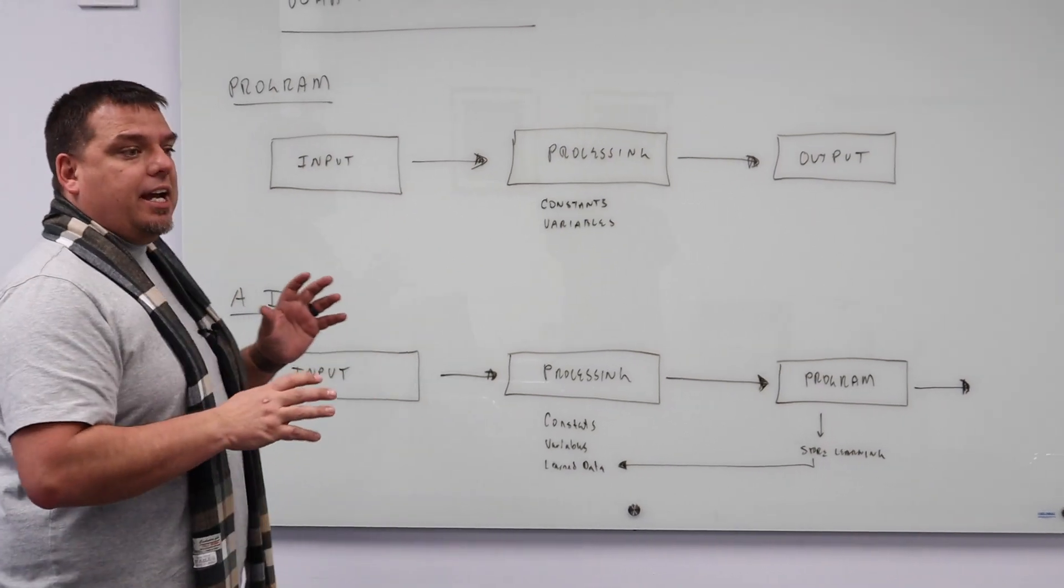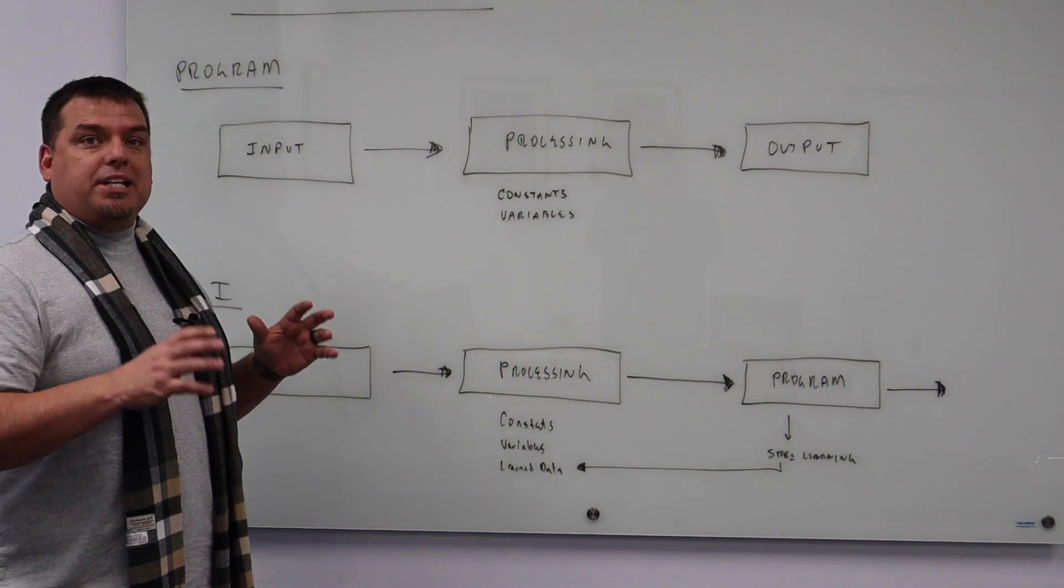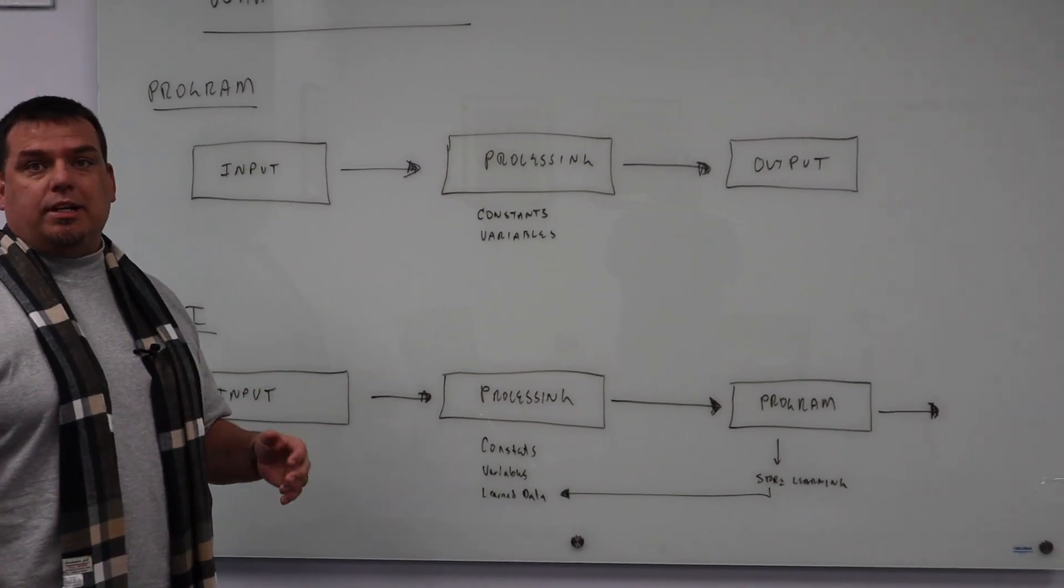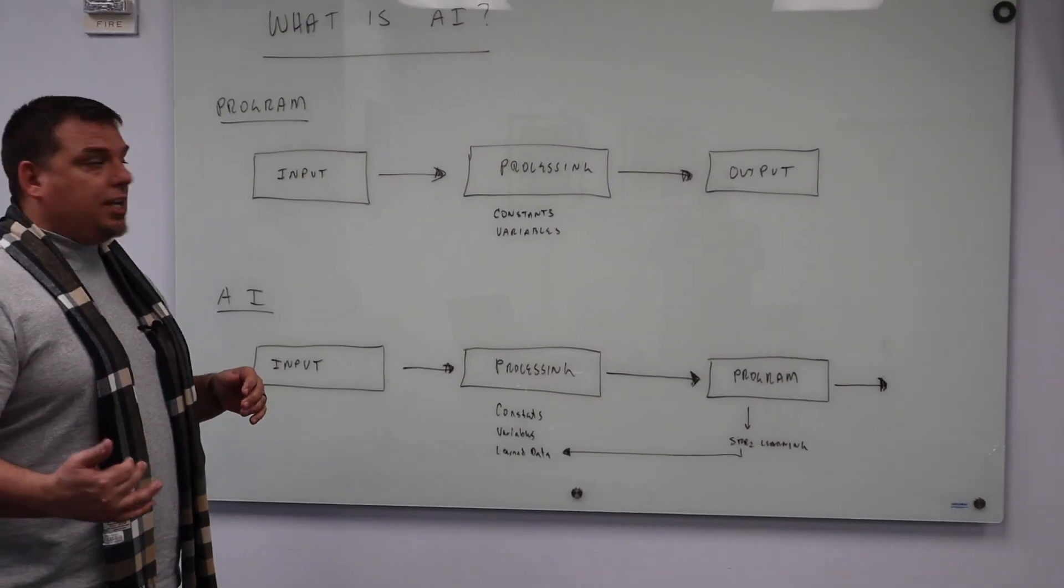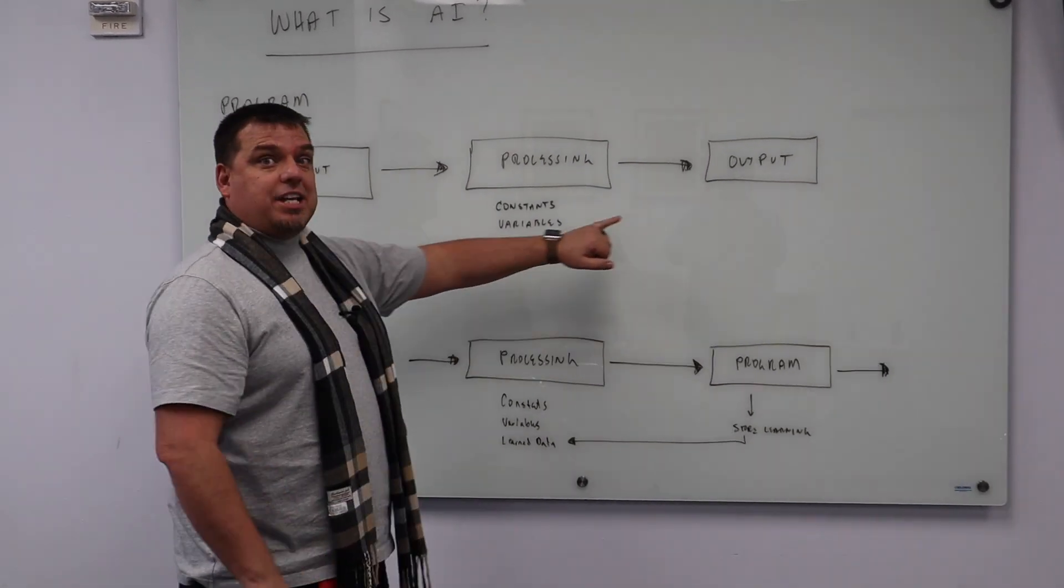Well, in order for us to understand what AI is, let's compare it to something we already know, which is a basic program, a basic script that we write, a class we create, or a method that we write, or a function that we write. A basic program is very simple. It has input, it has processing, and it has output.